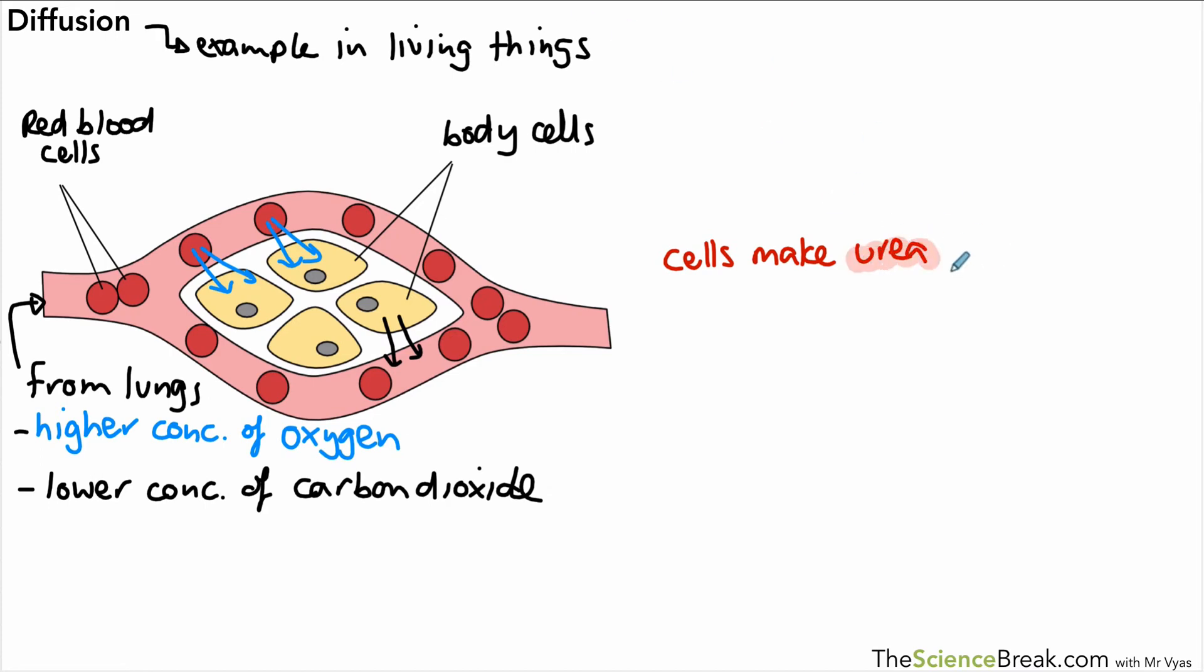Something else the cells do is make a substance called urea. Urea is a waste product mostly made by liver cells, but other cells make it as well. Because they make this waste product, it's going to be found in a higher concentration in the cells than in the blood. So that urea is going to diffuse out of the cells into the liquid part of the blood.